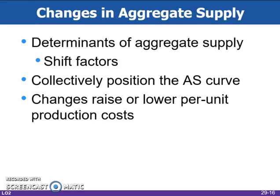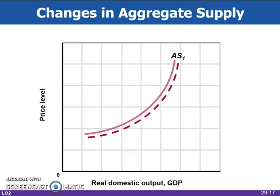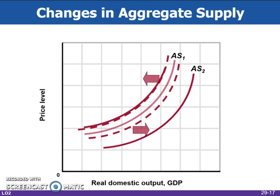Determinants of aggregate supply are the other things, besides price level, that cause changes or shifts in the aggregate supply at each price level. Changes that reduce per unit production costs shift the aggregate supply curve to the right. Changes that increase per unit production costs shift AS left. The rightward shift of the aggregate supply curve from AS1 to AS2 represents an increase in aggregate supply. The leftward shift of the curve from AS1 to AS3 shows a decrease in aggregate supply.